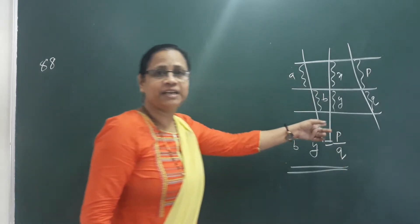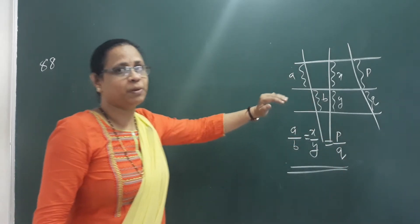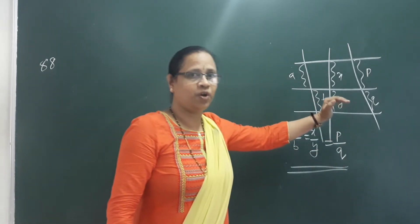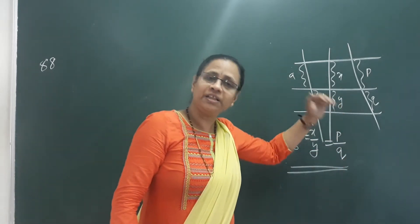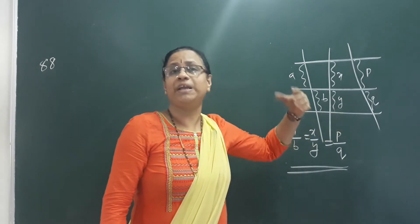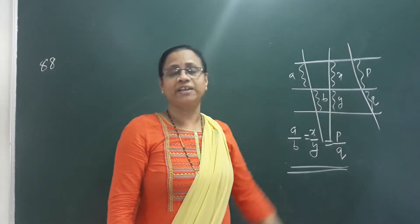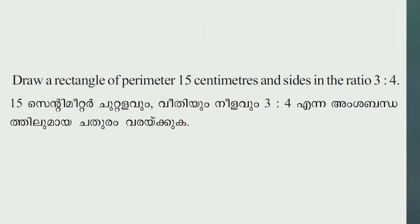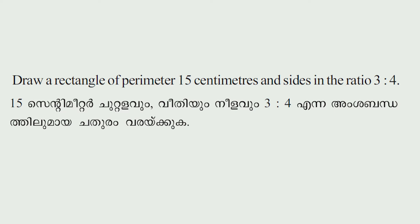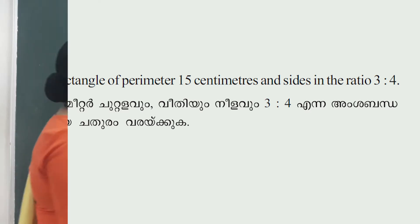That's why we study this chapter. Now, there is a practice problem on page number 88: Draw a rectangle of perimeter 15 centimeters with sides in the ratio 3 is to 4.